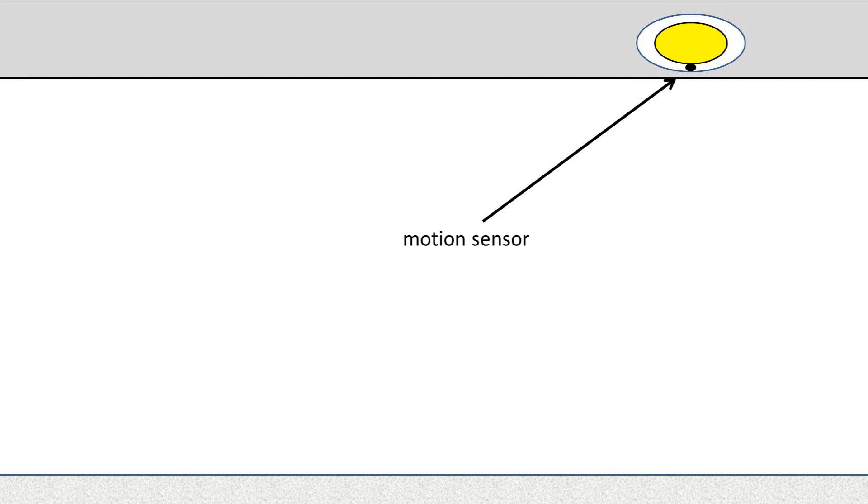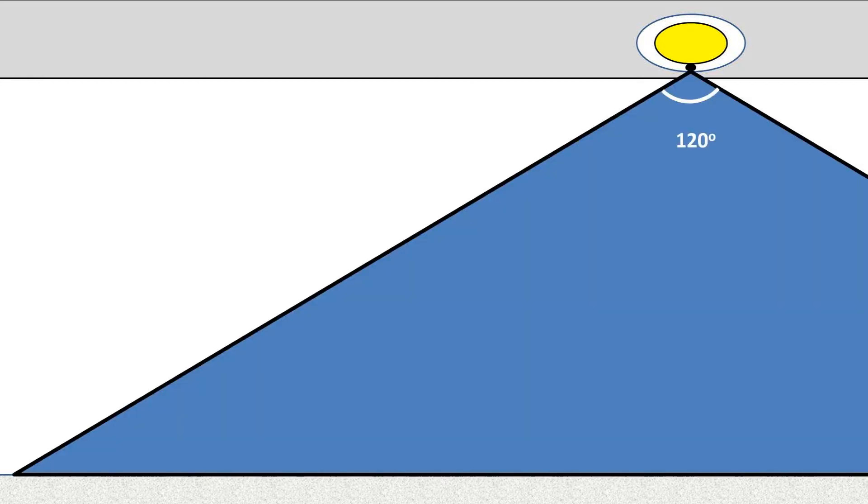In this problem, we have a light that has a motion sensor. The motion sensor has a detection range of 120 degrees as depicted.